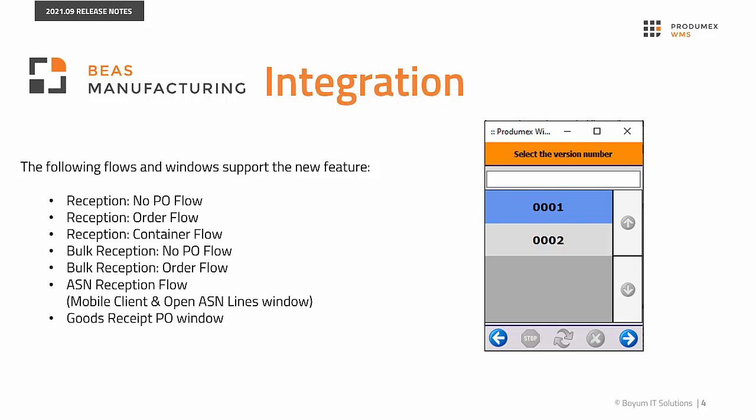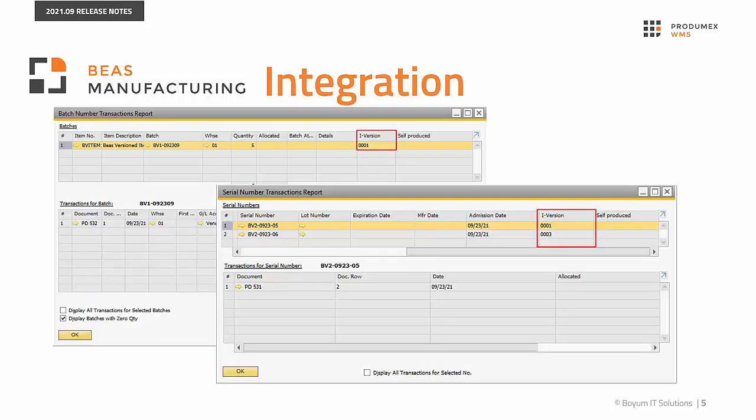Regarding ASN reception, the interfacing tool handles the Ballast Item Version column of ASN files. If the import in the ASN file contains the item version, the system automatically selects the version number and skips the Select the Version Number screen. When the system generates a Good Receipt PO document, you can see the version in the Batch Number Transactions report or in the Serial Number Transactions report.